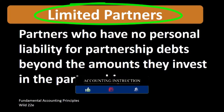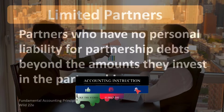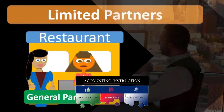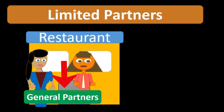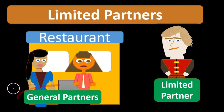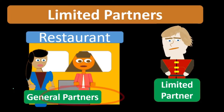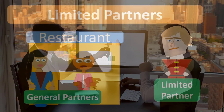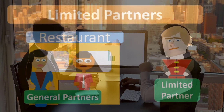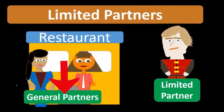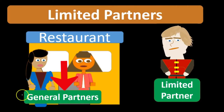When thinking about limited partners, we can contrast them to the typical partners in a partnership — the general partners. If we set up a general partnership, we may then include a limited partner. The general partnership typically has liability exposure similar to a sole proprietor, meaning both the assets put into the partnership as well as personal assets could be on the line.